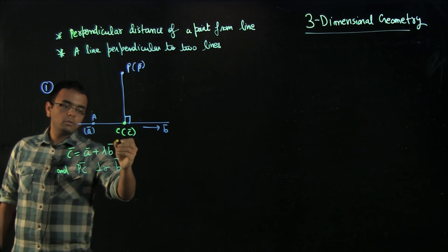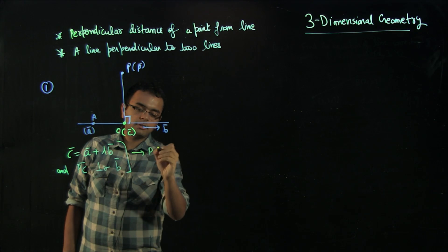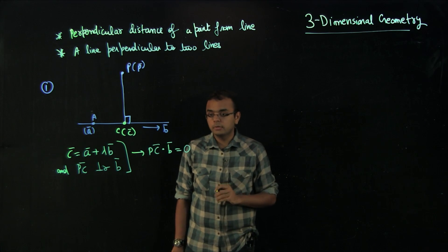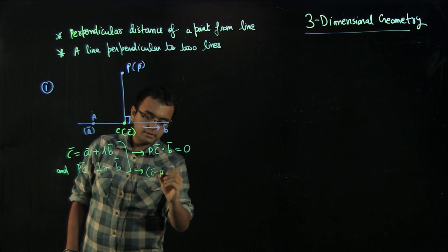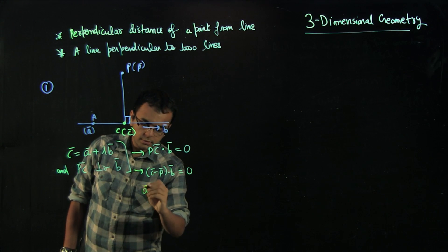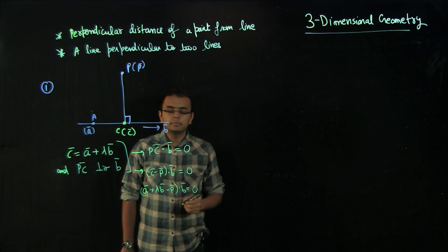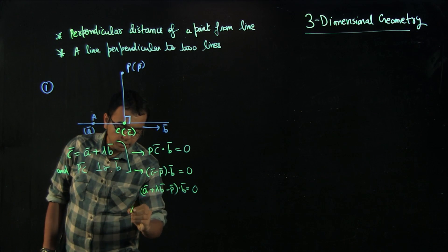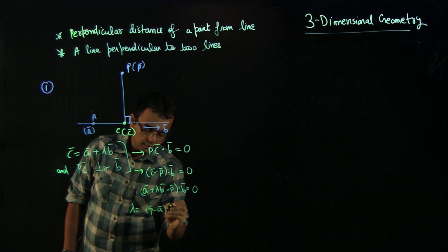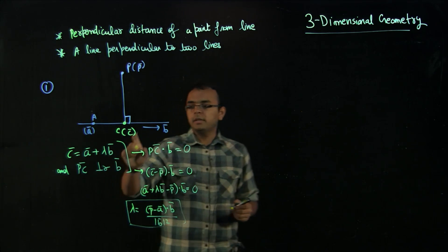We know that PC vector is perpendicular to the parallel vector B, because this is the perpendicular from P onto the line, so the condition of perpendicularity is PC dot B equals 0. Knowledge of vectors is critical in this chapter. So PC vector is C vector minus P vector, dotted with B vector equals 0. Substituting C vector as A plus lambda B, we get (A + λB − P) · B = 0, which gives lambda equals (P minus A) dot B divided by mod B squared.